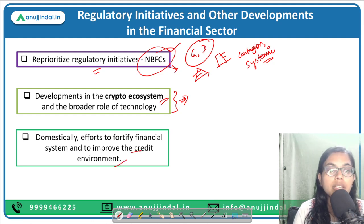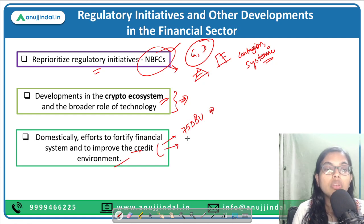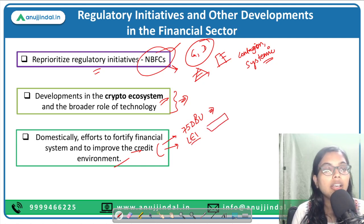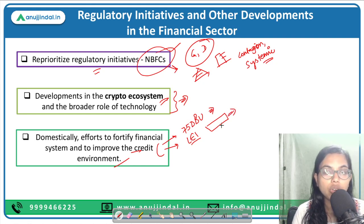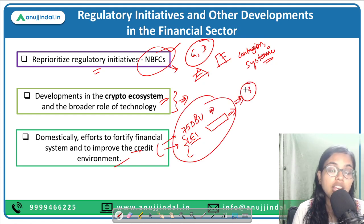Domestically, there were efforts to continue to fortify the financial system against sudden shocks and to improve the credit environment. You must have seen that RBI or the government has come up with 75 Digital Banking Units to provide customers with convenience. We also have the Legal Entity Identifier — a question was there in Phase 2 of the RBI Grade B exam — basically a unique digit provided to customers so that all types of transactions can happen through this. Several other features are all provided at one place in Annexure 3.